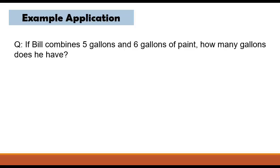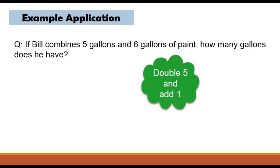And let's do a quick application. If Bill combines five gallons and six gallons of paint, how many gallons of paint does he have? Well, five and six are near doubles, so we're going to double five and add one more, giving an answer of 11 gallons.